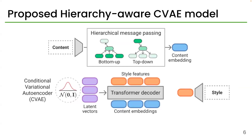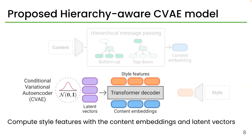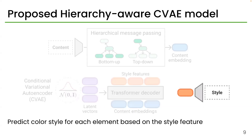We solve this task with a proposed hierarchy-aware model based on conditional variational autoencoder. We first embed content information with message passing to capture hierarchical relationships between elements. Then, we compute style features with the content embeddings and latent vectors sampled from the normal distribution. We finally predict a color style for each element based on the style feature.